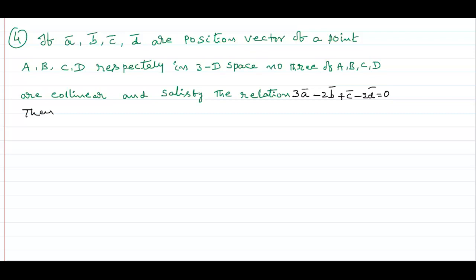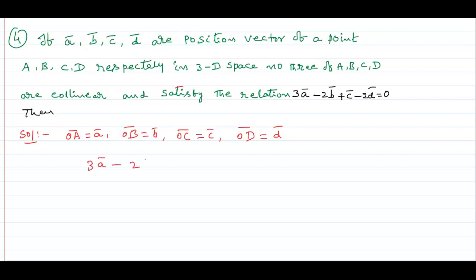If A bar, B bar, C bar, D bar are position vectors of points A, B, C, D respectively in 3D space, that means OA bar equals A bar, OB bar equals B bar, OC bar equals C bar, and OD bar equals D bar given. No 3 of A, B, C, D are collinear and they satisfy the relation 3A bar minus 2B bar plus C bar minus 2D bar equals 0. Observe that — first take the positive terms: 3A bar plus C bar, and send negative terms to the right-hand side: 2 into B bar plus D bar. Dividing both sides by 4.